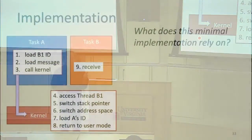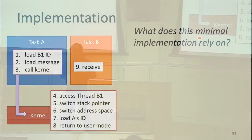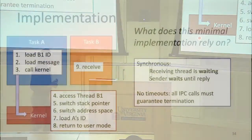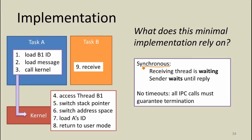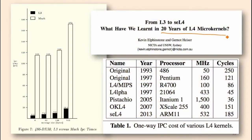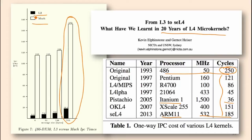There are important assumptions: the task that the message goes to must be waiting for it — no timeouts, no jumping to special handlers. This only works if the two tasks are well synchronized: the receiving thread waits for the message, and the sender calls the kernel and waits for the reply. Looking at data from a paper reviewing 20 years of experience, IPC cycles vary quite a bit by processor — down to 36 cycles on Itanium, reasonable on modern ARM — far less than other microkernels, representing that factor-of-20 improvement over Mach.